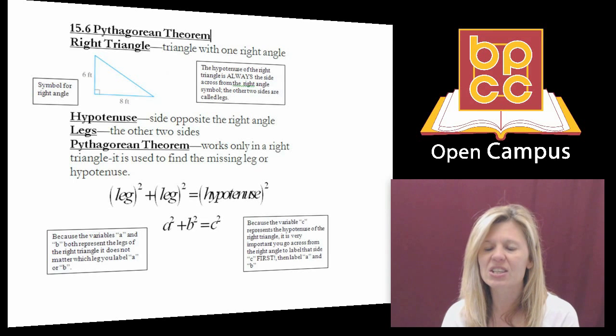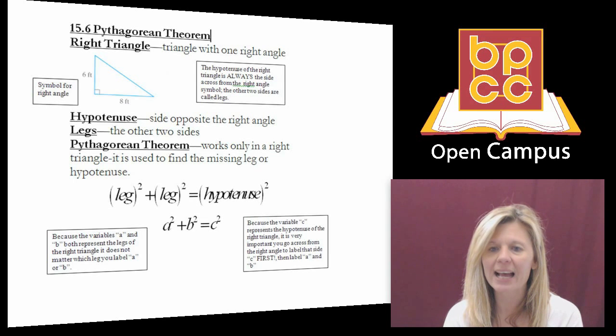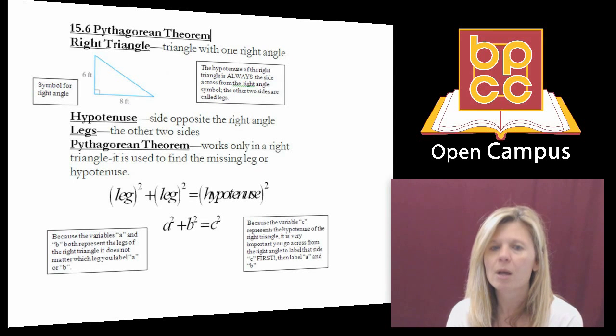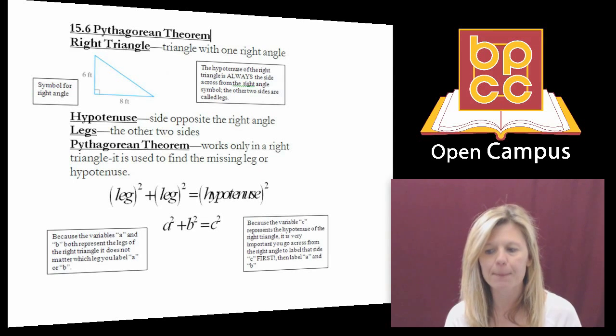So another way to talk about that rule, that formula, is instead of using the words leg and hypotenuse, he uses variables. And he says one of the legs he's going to call A, the second leg he's going to call B, and the third, the hypotenuse, he's going to call C. So many of you may have already heard Pythagorean theorem: A squared plus B squared equals C squared. And it's just the relationship between the two legs and the hypotenuse.